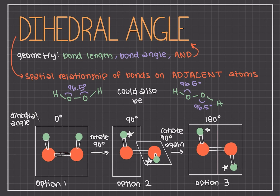Molecules containing many bonds typically contain a lot of dihedral angles that need to be specified. To summarize, the geometry of a molecule is determined completely by its bond length, bond angles, and the dihedral angle. This is especially important for more complex molecules.